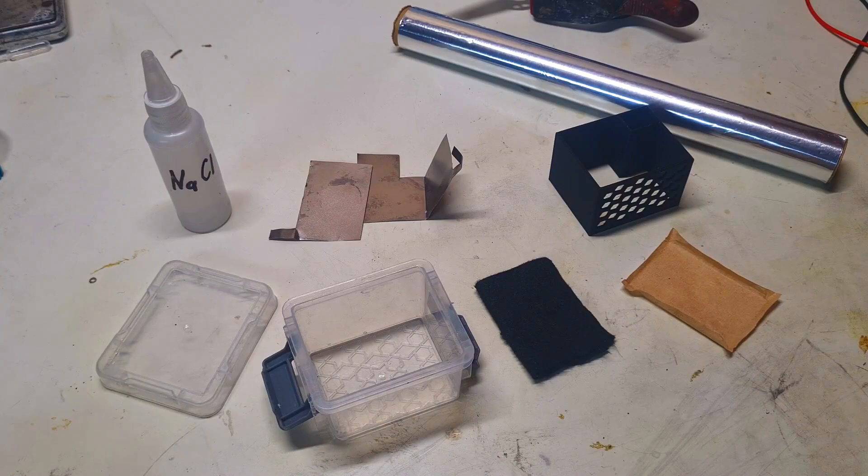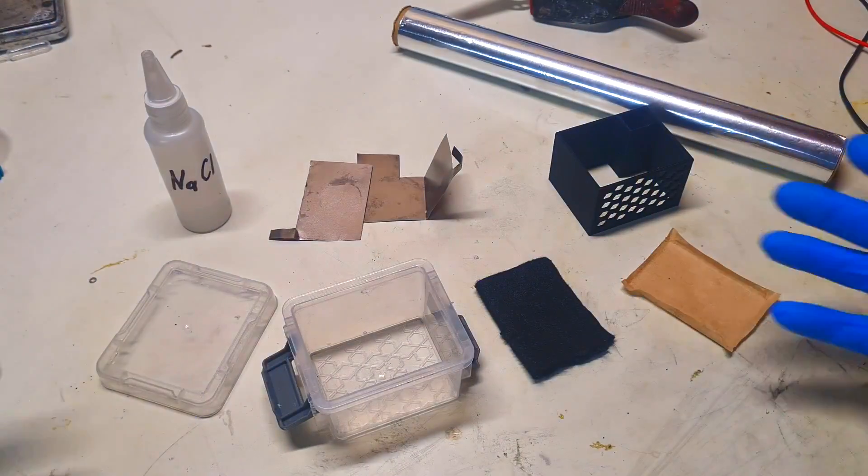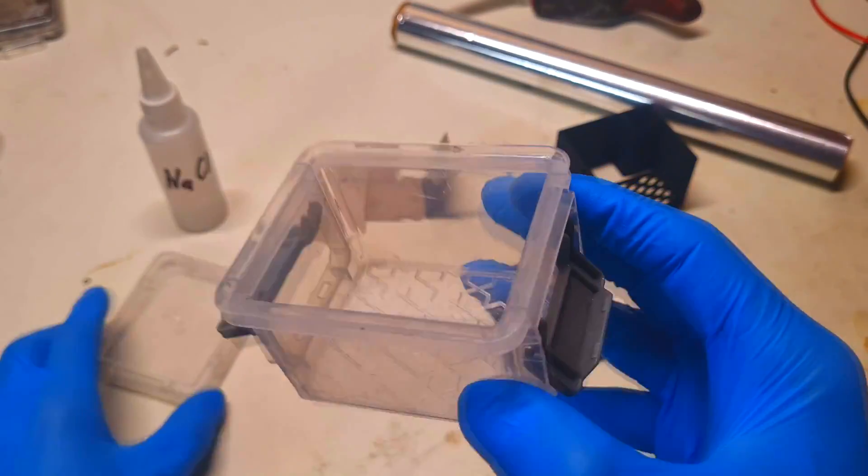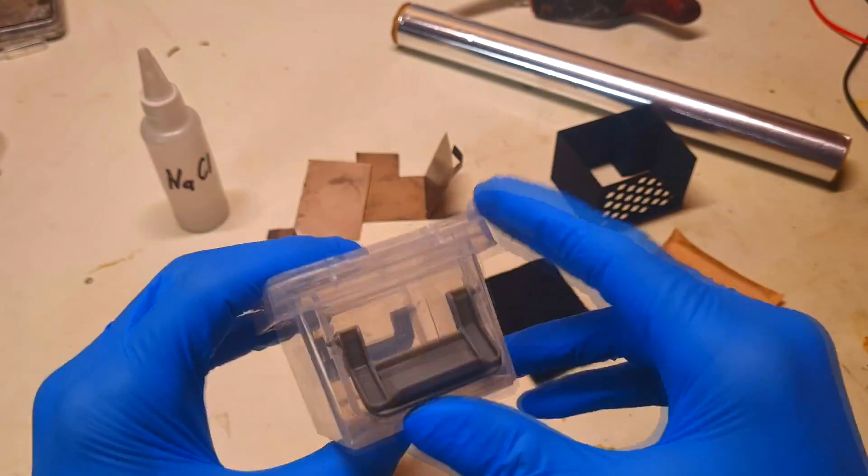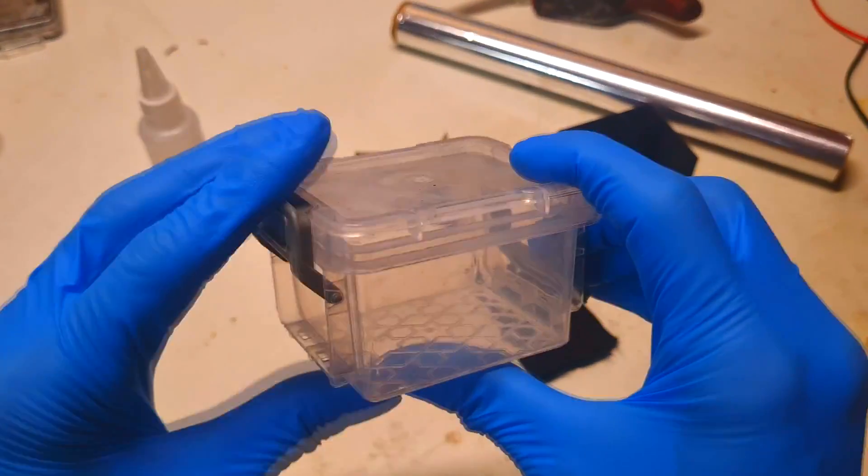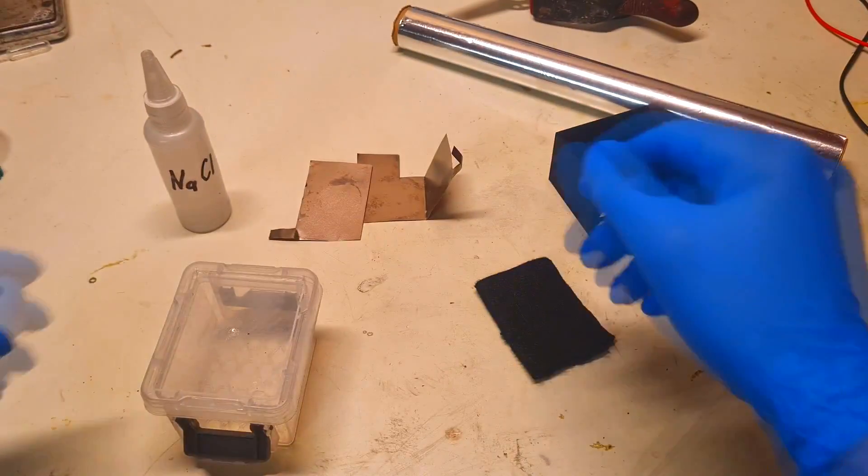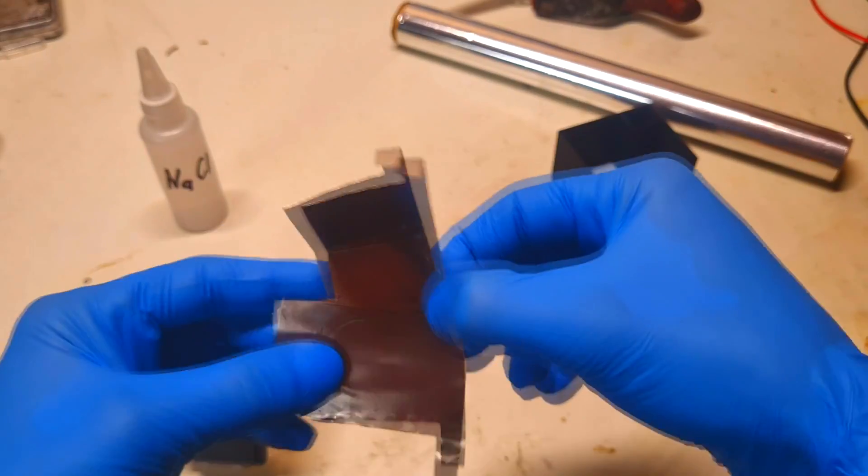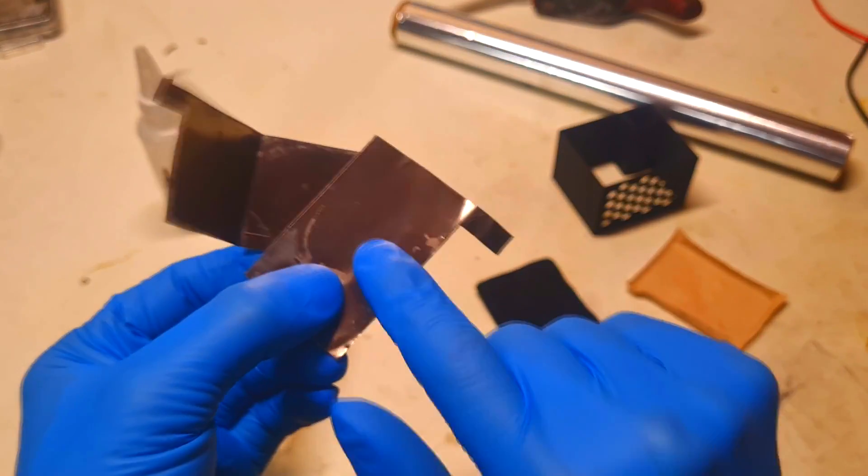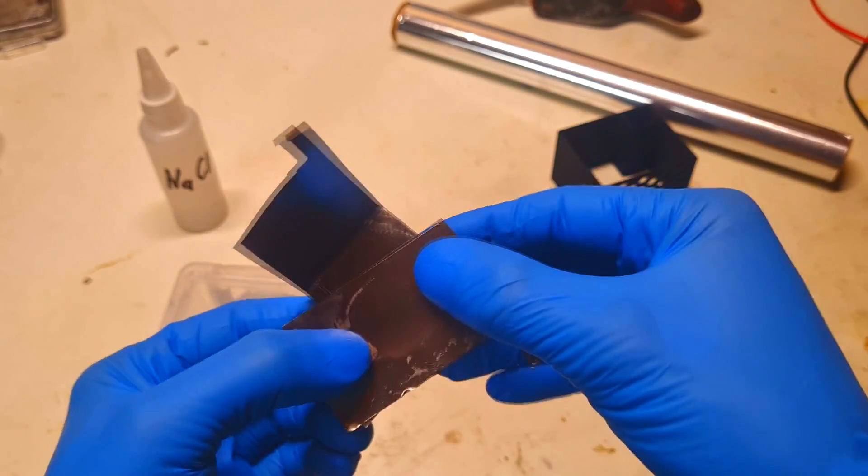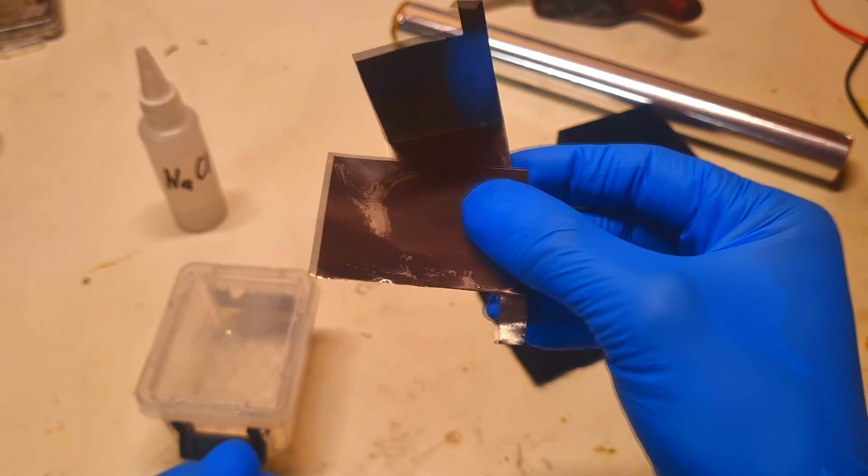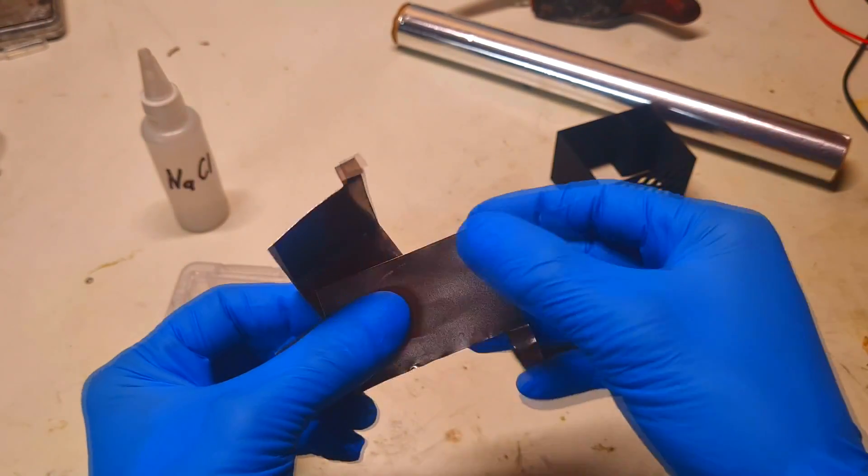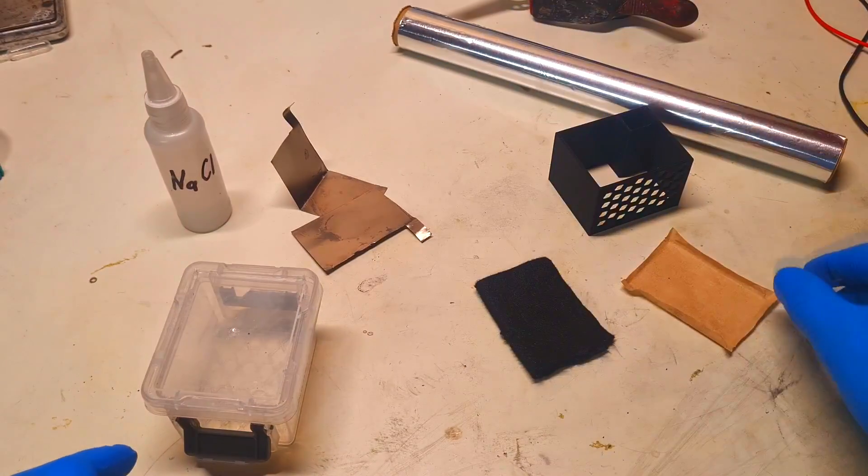To make this reusable aluminum air battery, we need a plastic housing like this one with a lid, and two pieces of current collectors for the positive and negative electrode. In our case, we use titanium foil because titanium is not as reactive as copper or aluminum.